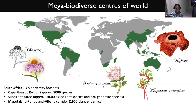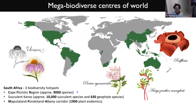In South Africa, we have our national flower, the Protea cynaroides, or the King Protea, which belongs to one of the most dominant groups of plants in the Cape — the Proteaceae — together with the Ericas and even the Restios. We are also home to three different biodiversity hotspots: the Cape Floristic Region with about 9,000 species in a very small area; Succulent Karoo, a semi-arid area with about 10,000 succulent species, renowned for hosting the largest biodiversity of succulents in the world; and then the Maputaland-Pondoland-Albany Corridor — I'll just call it the MPA — which has about 1,900 plant endemics.